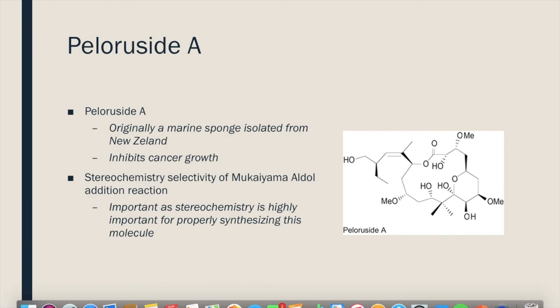The Mukayama-Aldol reaction allows us to be stereoselective with the molecules we produce, which is very important when creating this molecule in a laboratory setting. Because the molecule only has its cancer-treating function with certain stereochemistry. And treating cancer is a very significant part of our society. I'm sure we all know somebody who has either have cancer or it has affected us in some way. So that is what makes this reaction so important.